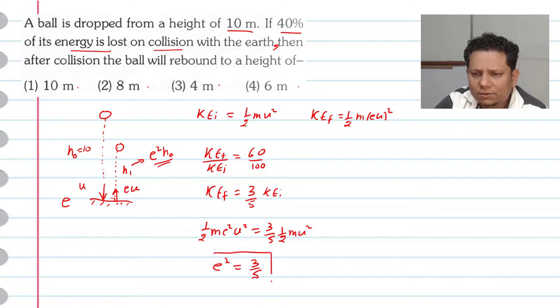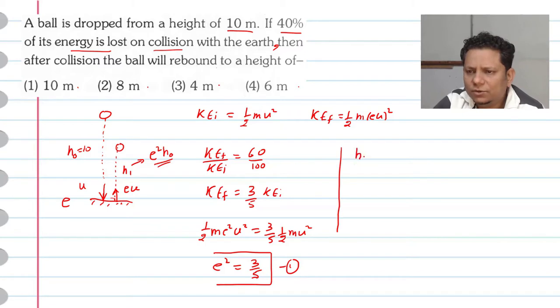This gives us e squared equals 3/5. Using the height formula H1 equals e squared H0,